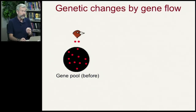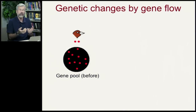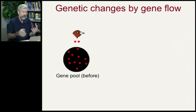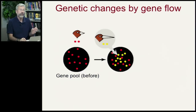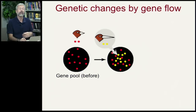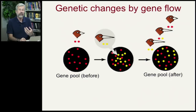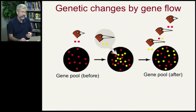We can also get genetic changes by gene flow. We may have one population that's genetically fairly homogeneous — everybody has pretty much the same allele. But then individuals from another population move in, bringing novelty to the population, so we then have a change in gene frequency by gene flow.